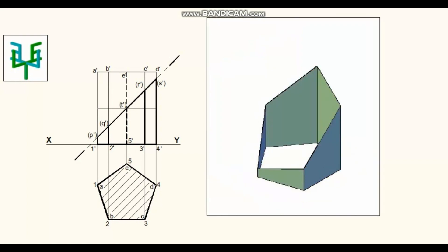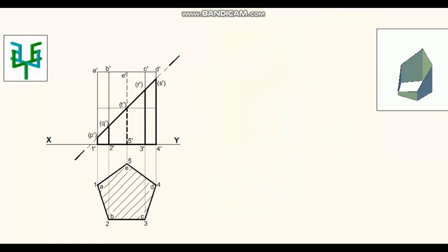For drawing development of the remaining part of prism, project the bottom and top faces of the prism. Draw a reference line. Side of the pentagon is 20mm, measure it and mark it on the projection.